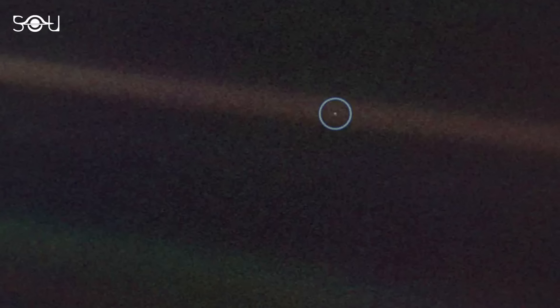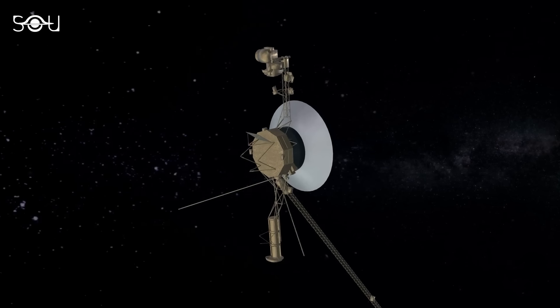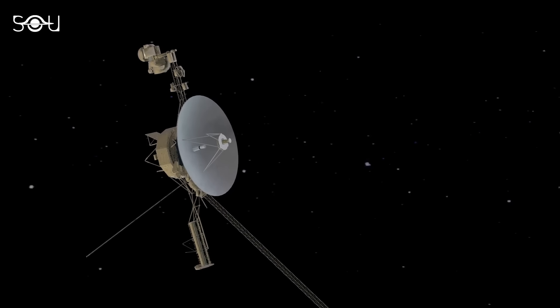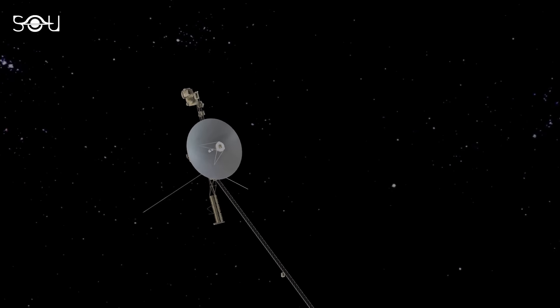This series included the famous pale blue dot image of Earth. This particularly significant photo shows Earth from 3.7 billion miles or 6 billion kilometers away, appearing as a tiny point of light in the vastness of space. After these images were taken, the cameras and other non-essential instruments were turned off to conserve power.